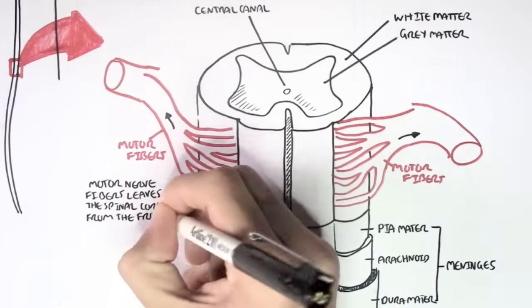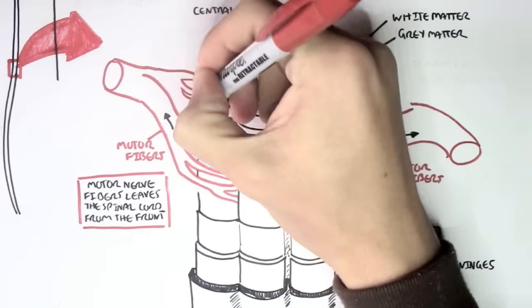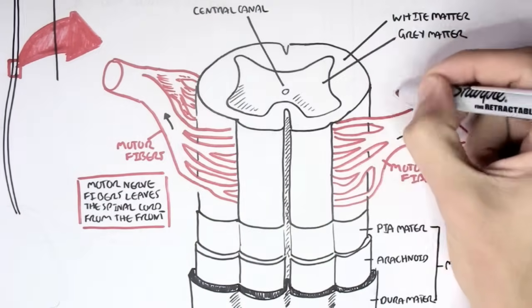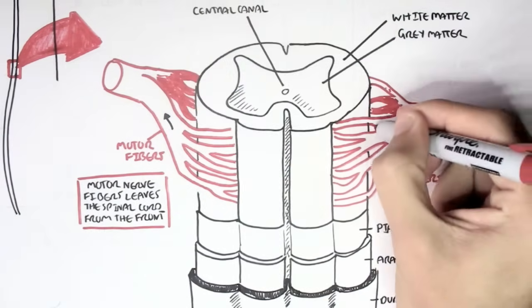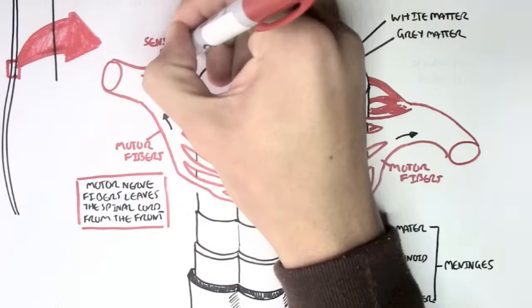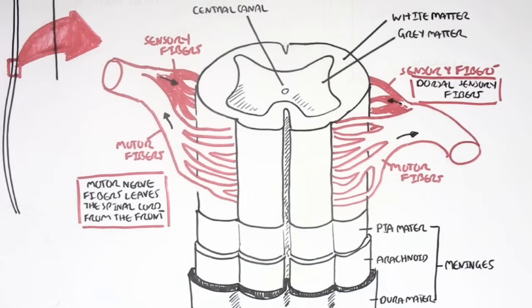Then we have fibres connecting at the dorsal aspect of the spinal cord, the back, and these are the sensory fibres. These fibres transmit information into the spinal cord, so towards the spinal cord, which then can go to the brain. The main thing to take out of this diagram is the sensory fibres and how it brings in information to the back of the spinal cord, the dorsal side of the spinal cord. And then this information can then travel up towards the brain from the spinal cord.